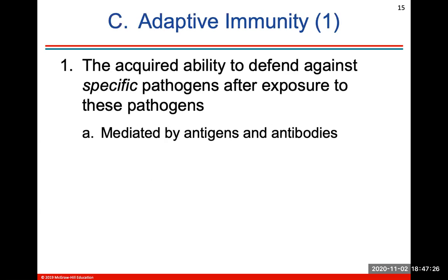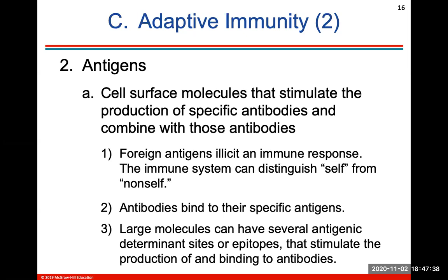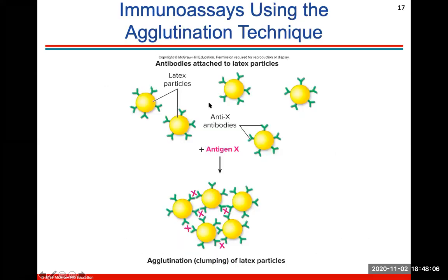Adaptive immunity is the acquired ability to defend against a specific pathogen after exposure, and this is always mediated by antigens and antibodies. Antigens are cell surface molecules that stimulate the production of specific antibodies and combine with those antibodies. A foreign antigen will elicit an immune response so the immune system can distinguish the cell from non-self. Antibodies will bind to their specific antigens, and large molecules can have several antigenic determinant sites that stimulate the production of and binding to the antibody.